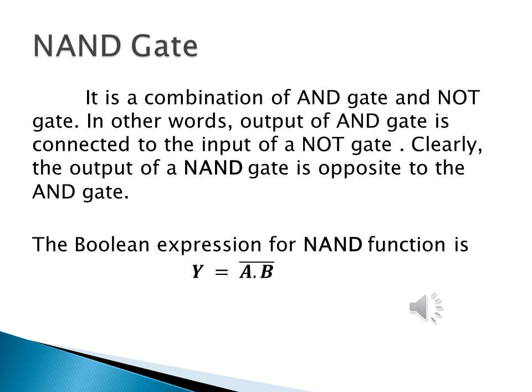Now let us come to the NAND gate. As the name suggests, it is a combination of the AND gate and the NOT gate. In other words, the output of the AND gate is connected to the input of the NOT gate. The output of a NAND gate is opposite to that of the AND gate. The boolean expression for the NAND function is given by Y equals A dot B-bar. To perform the boolean algebra operation, first the inputs must be multiplied and then the inversion is performed.